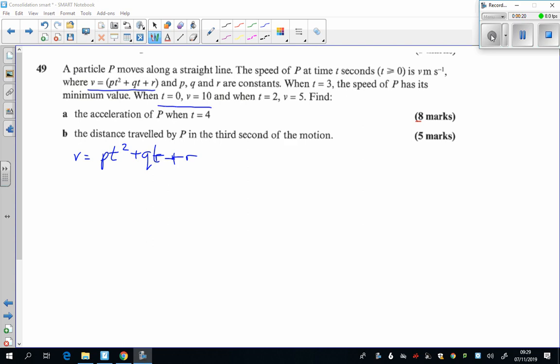Let's start with this one here. At t equals 0, the velocity is 10. So I've put the 10 in here, of course you get 0 here, you get 0 here, and we get R. So the first bit, R is equal to 10.